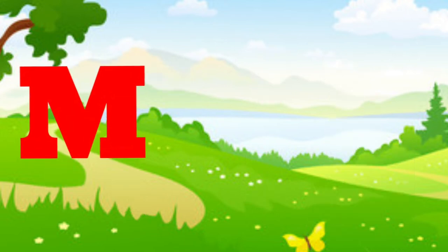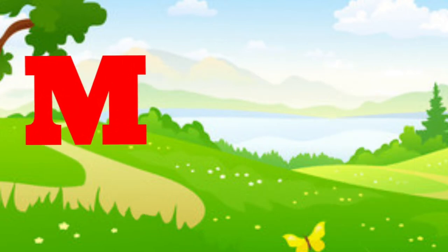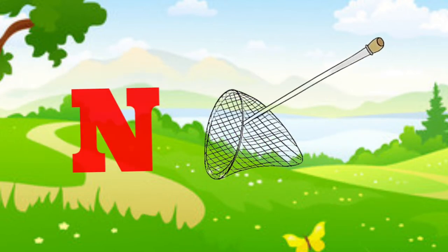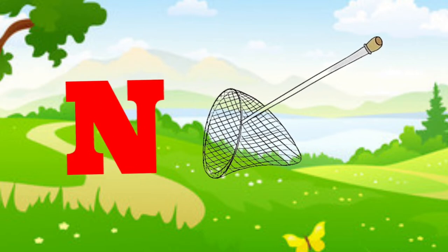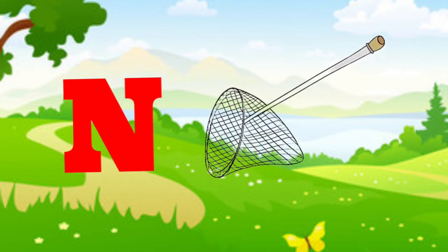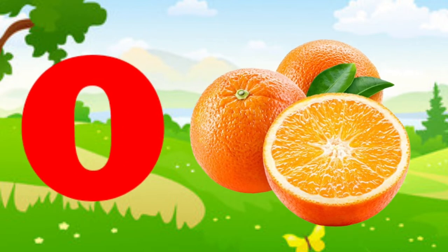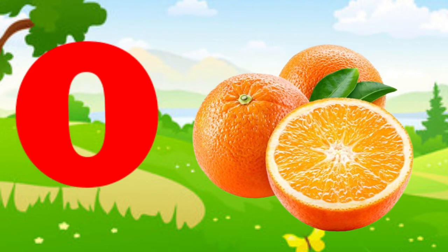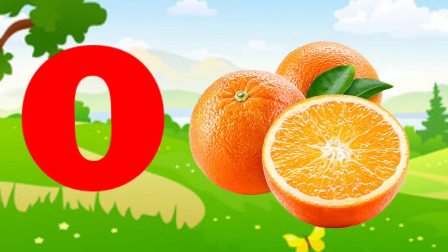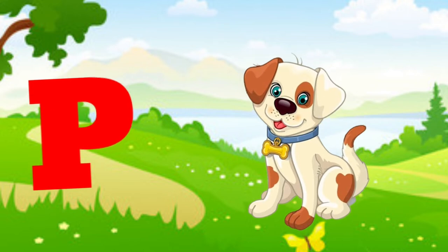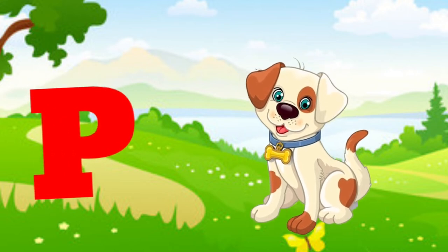M is for mat, m-m-mat. N is for net, n-n-net. O is for orange, o-o-orange. P is for pet, p-p-pet.